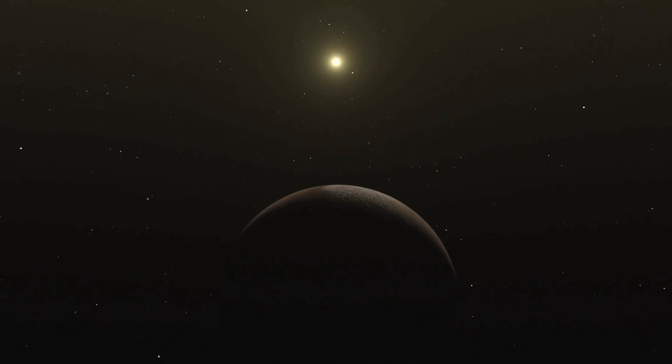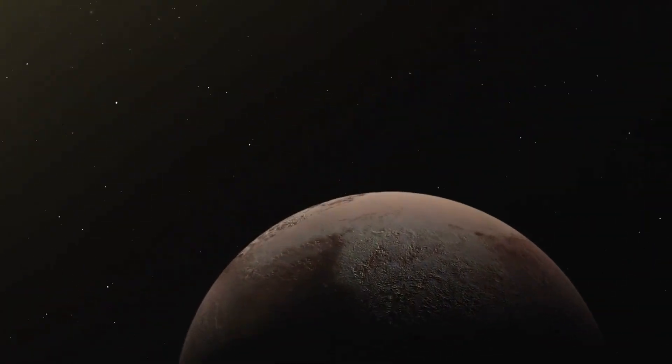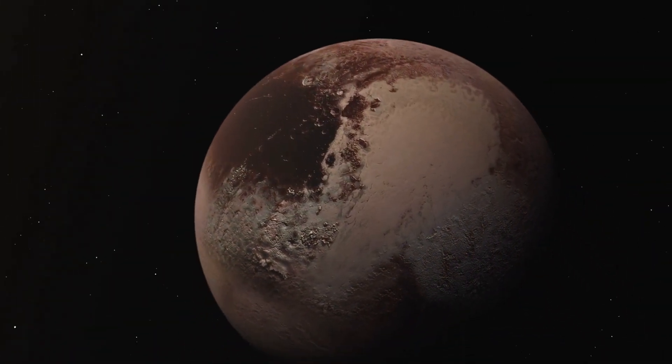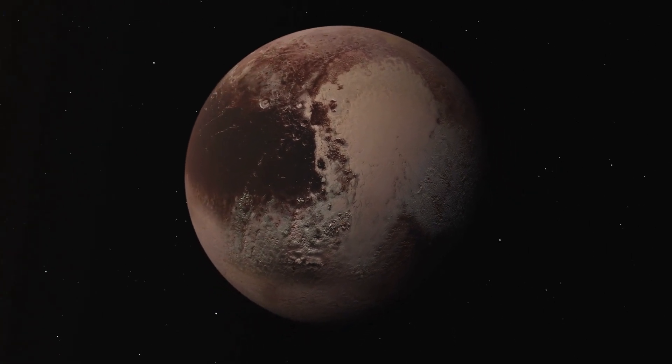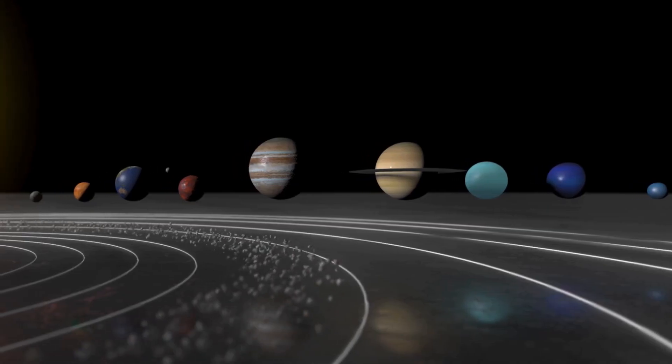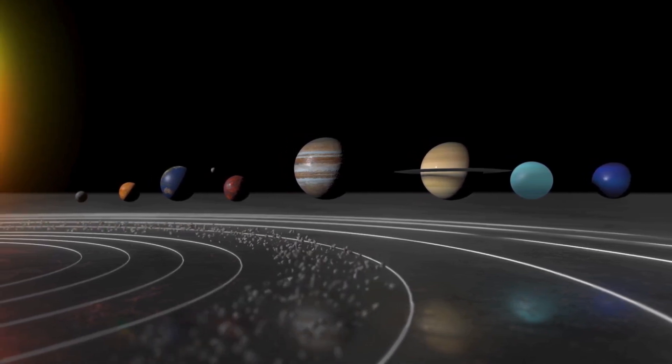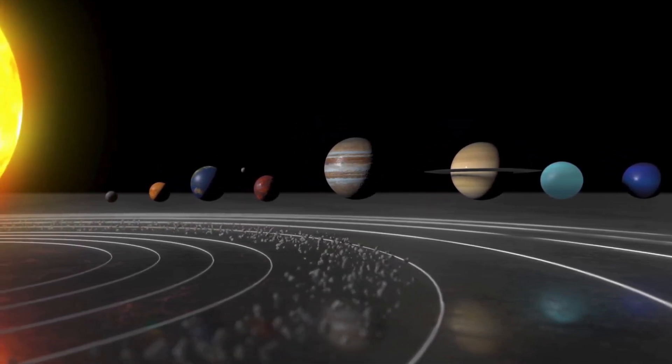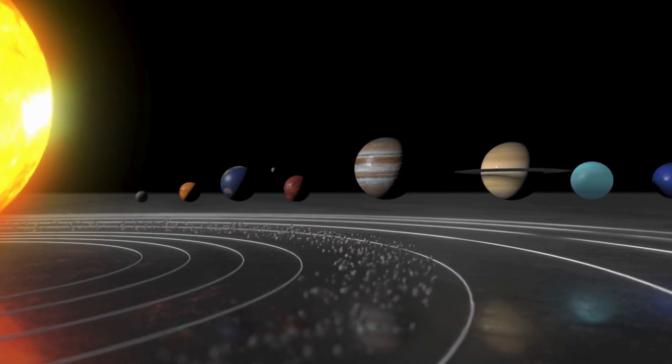Pluto's orbit around the Sun is unlike any other planet in our solar system. It takes an astonishing 248 years to complete a single orbit, meaning that since its discovery in 1930, it hasn't even finished one complete revolution.